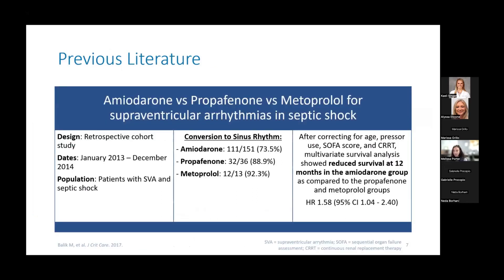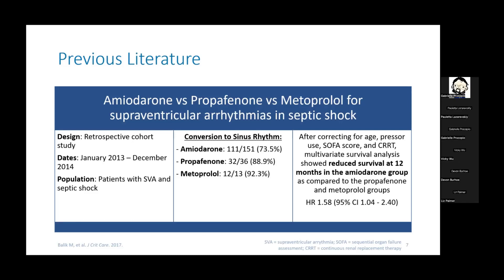Looking at previous literature, there is not a lot of literature on rhythm control specifically in patients with sepsis or septic shock. However, the authors of the study we're reviewing today did previously publish a retrospective cohort study looking at amiodarone versus propafenone versus metoprolol for supraventricular arrhythmias in septic shock, conducted from January 2013 to December 2014. The large majority of patients received amiodarone. A greater percentage of patients who received propafenone and metoprolol converted to sinus rhythm at 24 hours compared to the amiodarone group. A multivariate survival analysis correcting for age, pressor use, baseline SOFA score, and need for renal replacement therapy showed reduced survival at 12 months for patients who had received amiodarone compared to the propafenone and metoprolol groups.